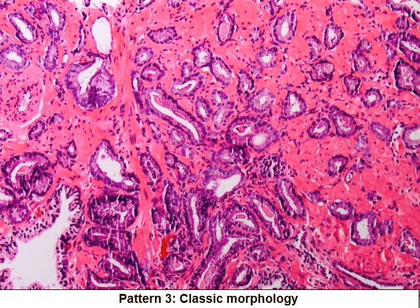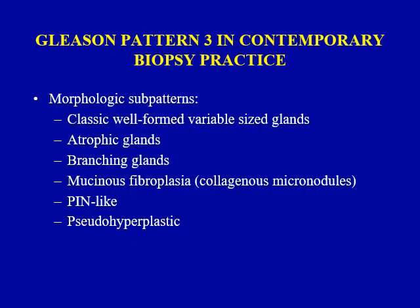Here is a classic example of Gleason pattern three. You can see variably sized, individual, discrete glands in an infiltrative pattern — you can essentially draw a circle around each of these glands. However, it is very important to understand the morphologic variations of pattern three to avoid the mistake of overgrading Gleason pattern three.